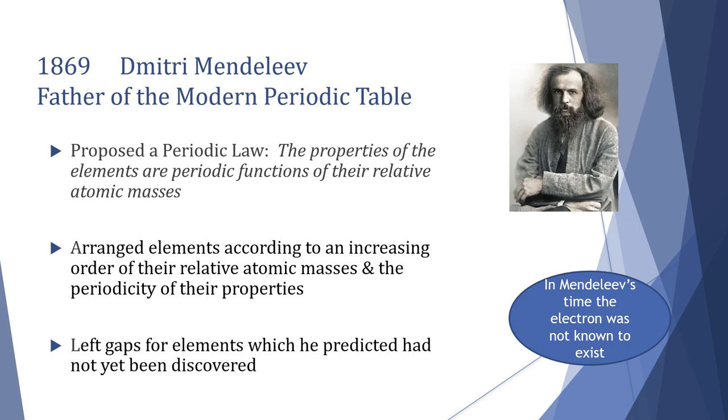It is important to note here that in Mendeleev's time the electron was not known to exist, neither were even protons and neutrons. So he was doing a lot of things that gave rise to us being able to explain by using atomic structure even though he was unaware of the nature of subatomic particles at the time.